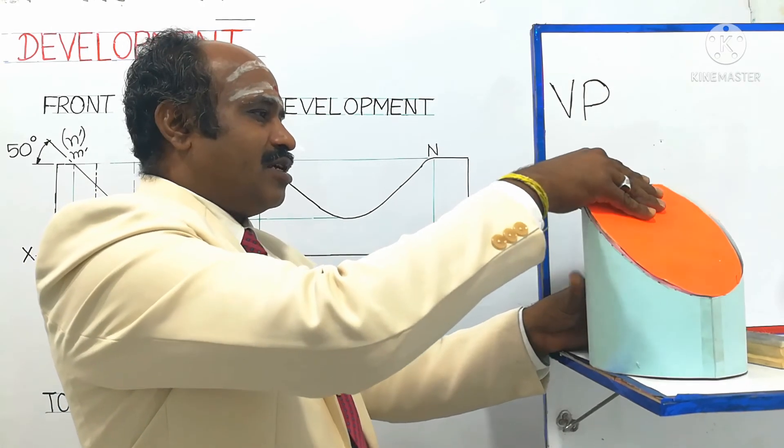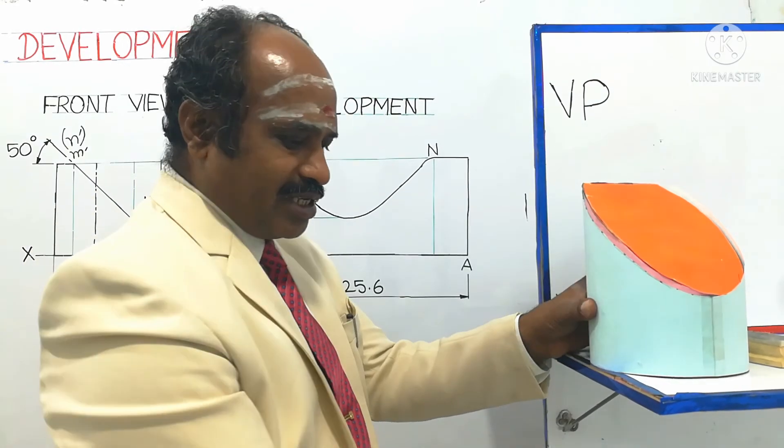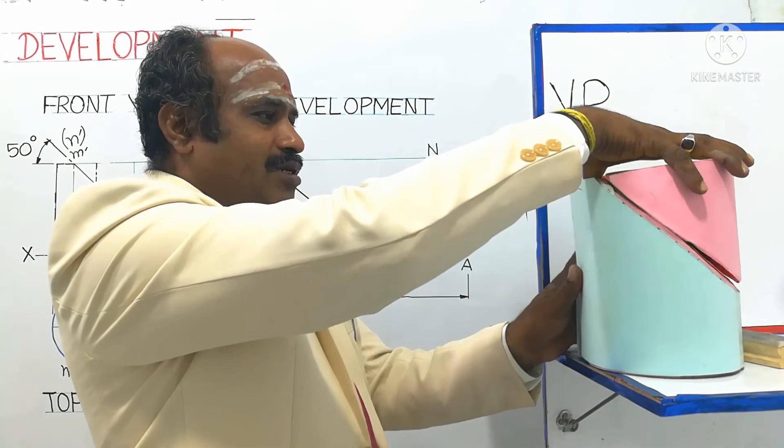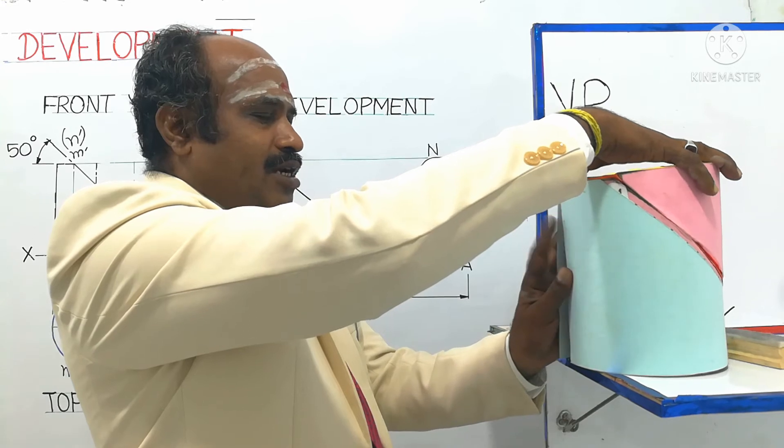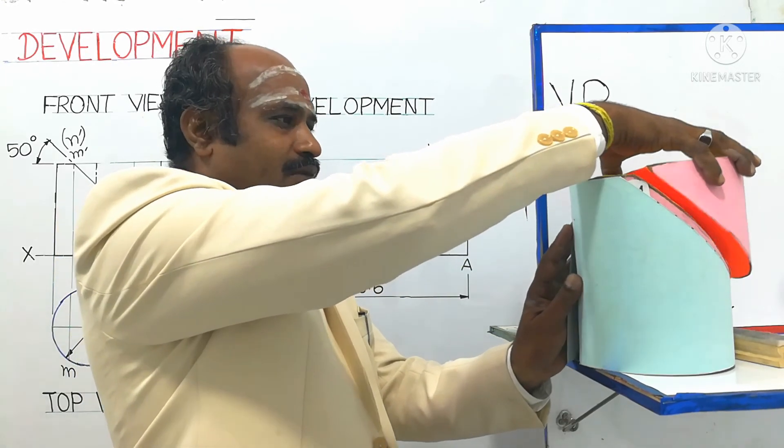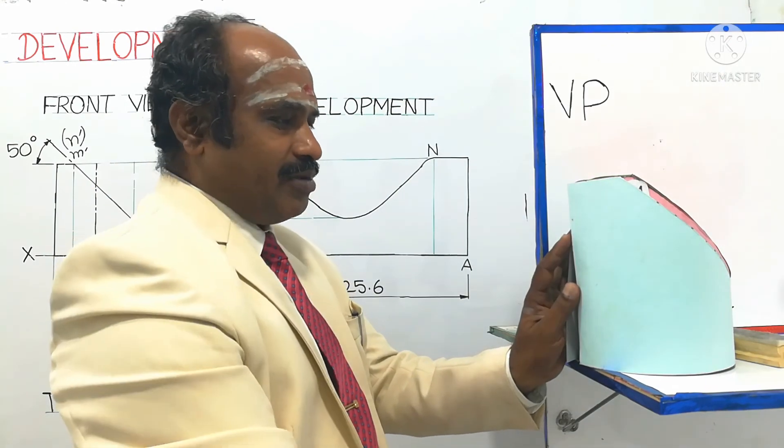For the lower portion of the cylinder, initially it was like this. After passing the cutting plane inclined to HP, which meets the axis 40mm above the base, this will be the removed portion and this will be the retained part.